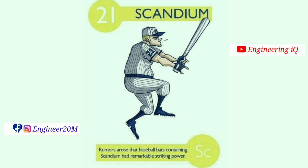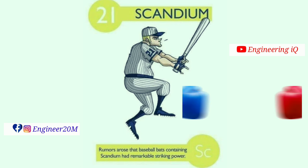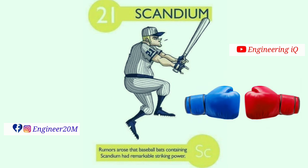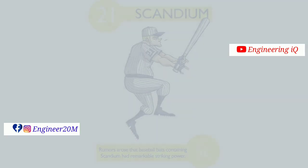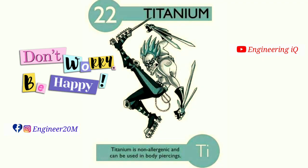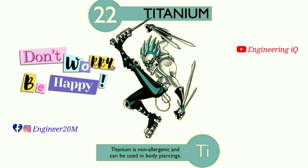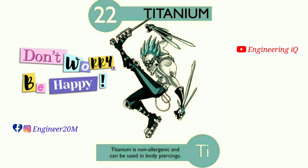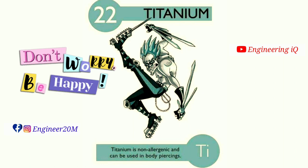Scandium: atomic number of scandium is 21. Rumors arose that baseball bats containing scandium have remarkable striking power. It is denoted by Sc. Titanium: atomic number of titanium is 22. Titanium is known to be hypoallergenic and can be used in body piercing. It is denoted by Ti.